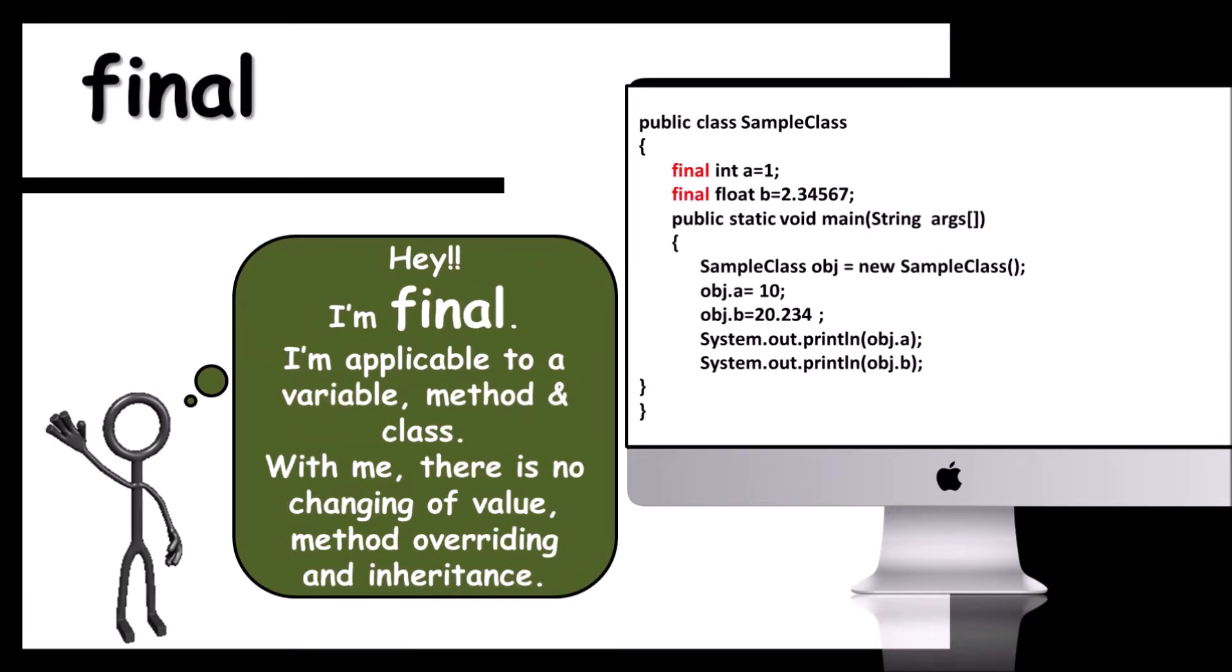And next, here comes final. Hey, I'm final. I'm applicable to a variable, method, or class. With me there is no changing of value. Here you can observe final int a and final float b have been declared. The program generates error when we try to modify it.